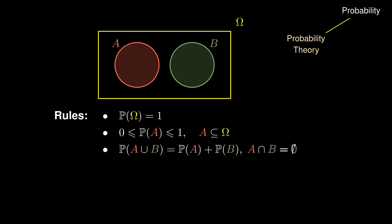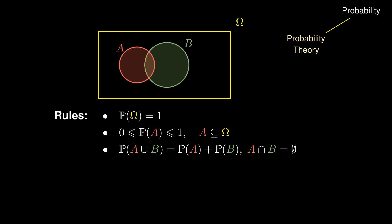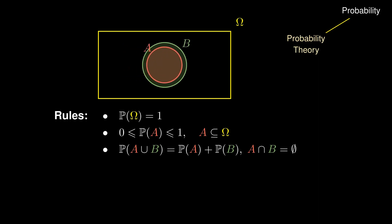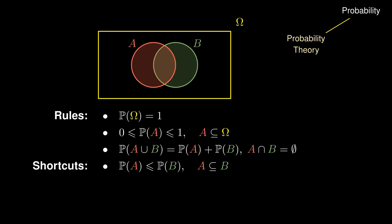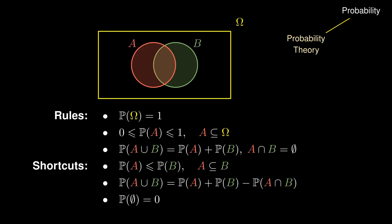These are the fundamental rules of probability, which yield some surprising shortcuts. Firstly, if every outcome in A is in fact an outcome in B, then the probability of landing in A cannot be more than the probability of ending up in B. Likewise, if events A and B share some common outcomes, we can still find the probability that the outcome lies in either A or B. And finally, the probability that the outcome belongs to the empty set — the set of no outcomes — by definition must be 0.